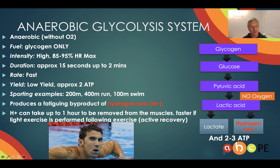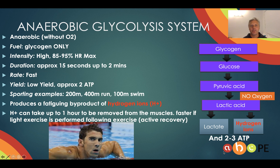This system has a low yield, but not as low as the ATP-PC system. It can be done quickly, but because it's a more complex equation, it's not as quick as the ATP-PC system. The downside is that it produces a fatiguing metabolic byproduct — hydrogen ions — and when those accumulate in the muscle, they will fatigue us and stop us from exercising. Unfortunately, that takes time to be removed. We need to slow down our exercise — that is, we need to complete an active recovery.